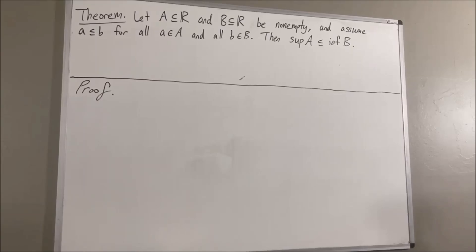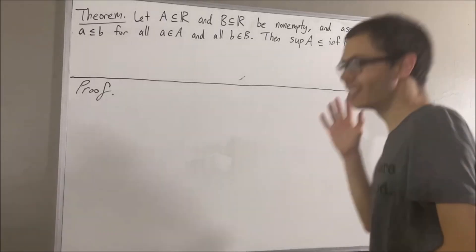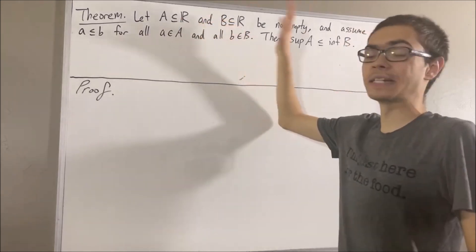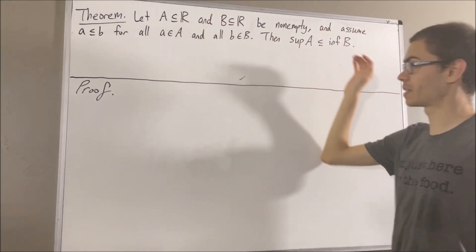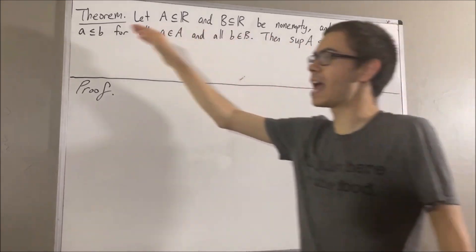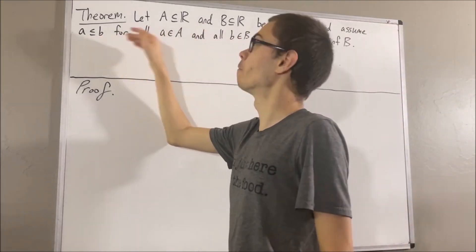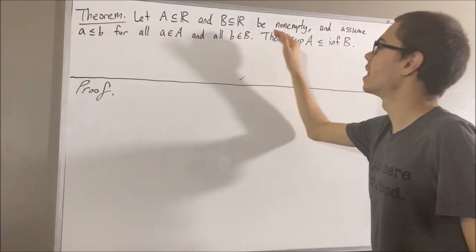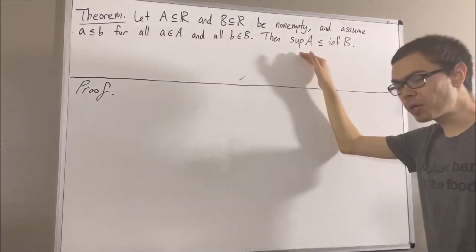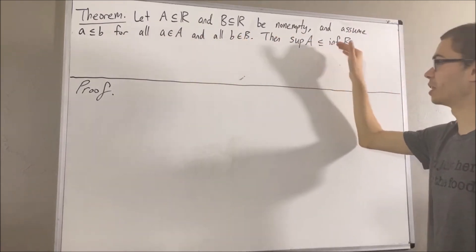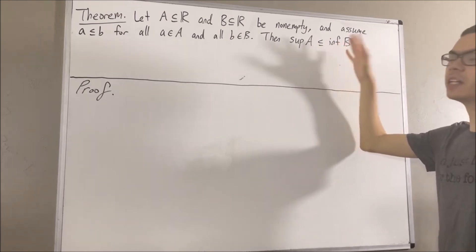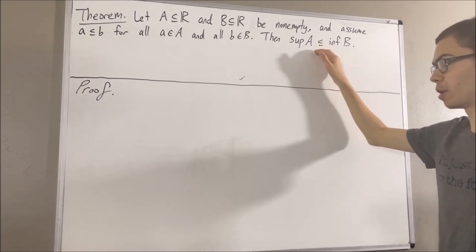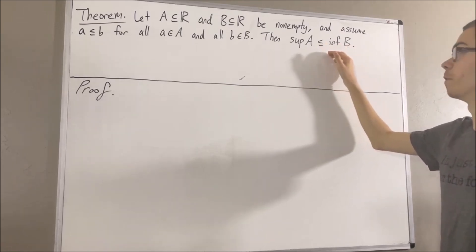Hello! In this video, we are going to prove the following theorem. Let A and B be non-empty subsets of real numbers, and assume a is less than or equal to b for all a in A and all b in B. Then the supremum of A is less than or equal to the infimum of B. In other words, the least upper bound of A is less than or equal to the greatest lower bound of B.